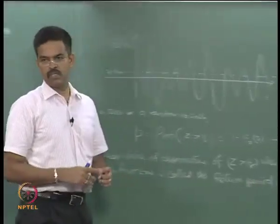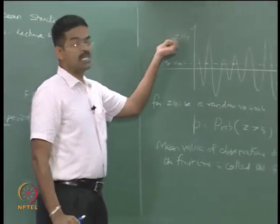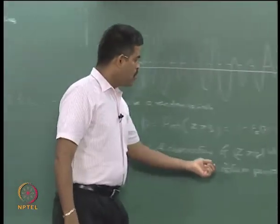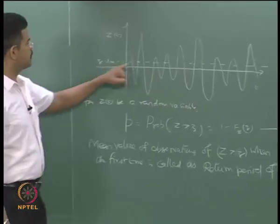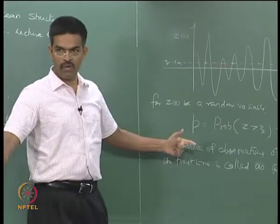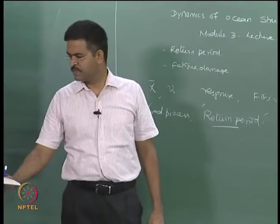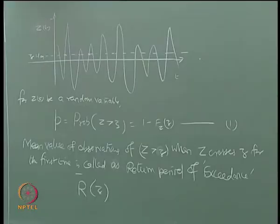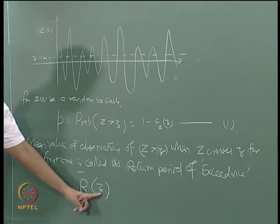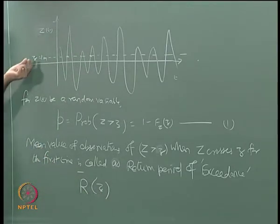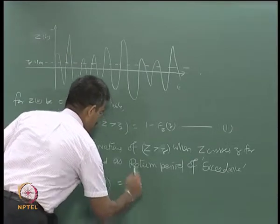Why am I calling it exceedance? Because I am looking for a condition where the sea surface elevation random variable z(t) exceeds a pre-agreed value zeta. So it is the return period of exceedance. What does it mean? It is the period at which the first time and the second time you observe z exceeding zeta, i.e., what period does this occurrence of z exceeding zeta happen in a given time record capital T. I can say R(z), the return period of exceedance of z, is simply given by the inverse of the probability P.